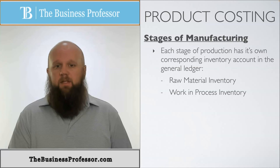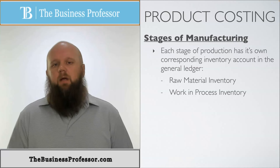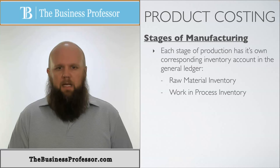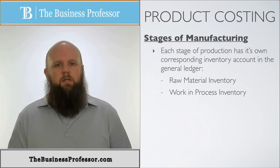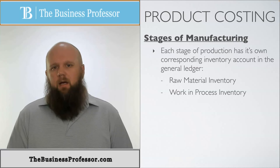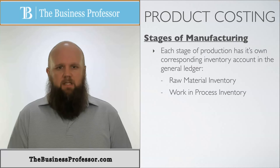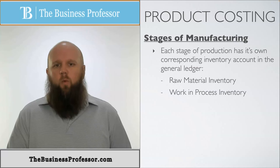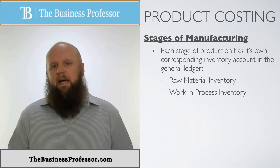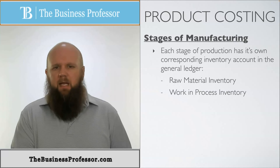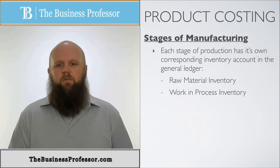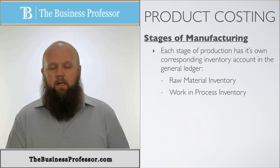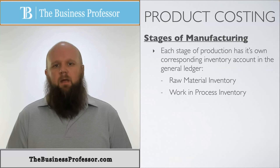The second inventory account is called work in process. This is where raw material has been brought in and we're actually starting to put labor to it and create the product. From a percentage standpoint, this would be 1% to 99% — anywhere in that range falls into work in process because it's been started but just hasn't been finished yet.